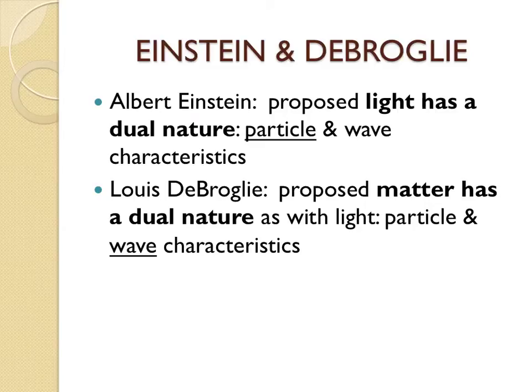Here is a brief summary as to how we came to treat electrons as waves. Albert Einstein proposed that light has a dual nature — that it can behave like both a particle and a wave. The wave characteristics were well accepted, but the particle characteristics were what Einstein proposed. That led Louis de Broglie to propose that matter could also have a dual nature. The particle characteristics were well accepted, and it's the wave characteristics of matter, in particular the electron, that are part of our quantum mechanical model.